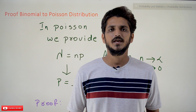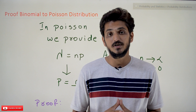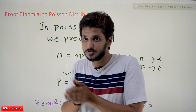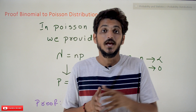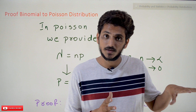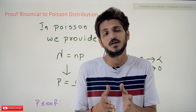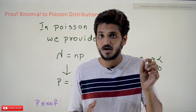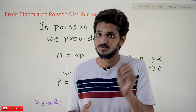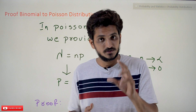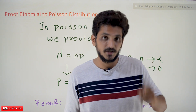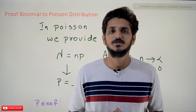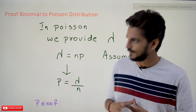Hi, welcome to Learning Monkey. I am Raghu. In this class we'll discuss the proof of binomial distribution to Poisson distribution. In our last class we understood the concept of when we apply Poisson distribution, and we provided the intuition about what lambda is and how we got the value lambda = NP. This is a continuation class — please watch that class first; the link for the playlist is in the description below.